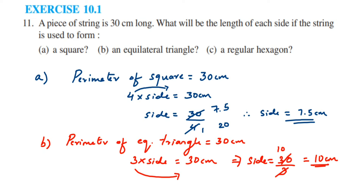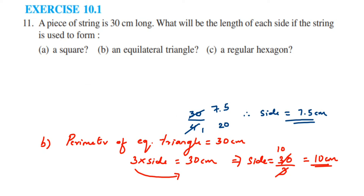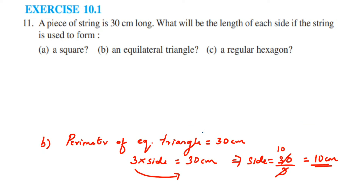Next is the regular hexagon. A hexagon is a polygon with six sides. Since we are given that it is a regular hexagon, all sides are of the same length. If it were not regular, we could not say all sides are equal and would have to add all sides individually. Since it is regular, the perimeter = 6 × side.